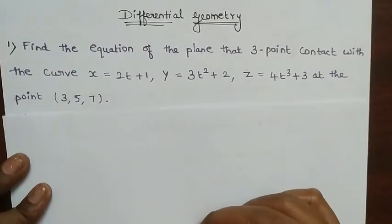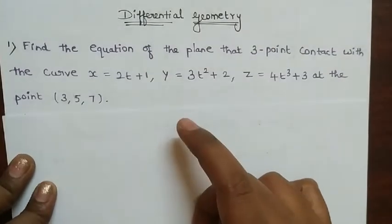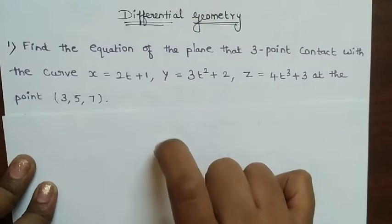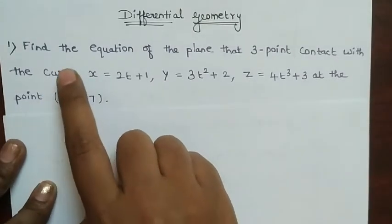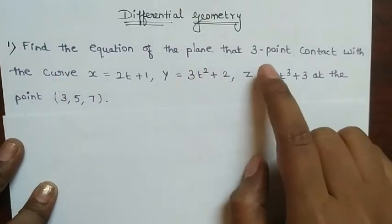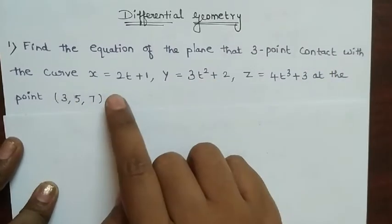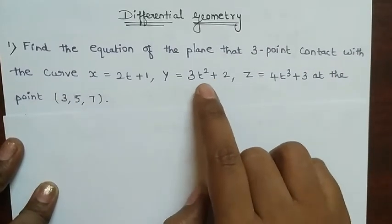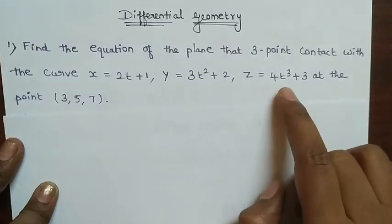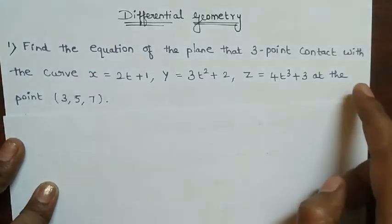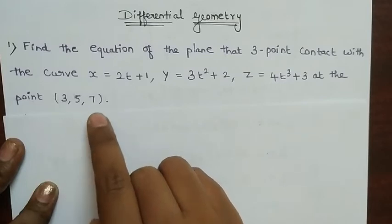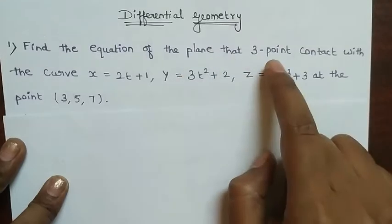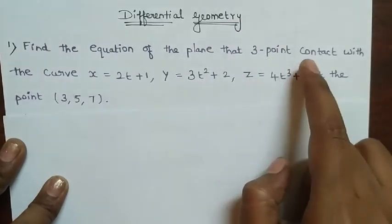Welcome to our channel VDMAXACADEMY. In this video we are going to see one problem in differential geometry: find the equation of the plane that has 3-point contact with the curve x = 2t + 1, y = 3t² + 2, z = 4t³ + 3 at the point (3, 5, 7). They are asked to find the equation of the plane with 3-point contact.